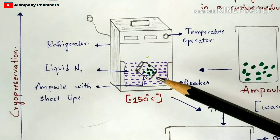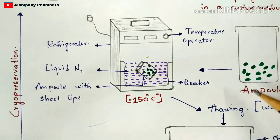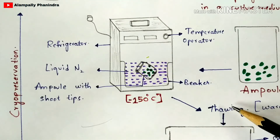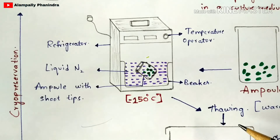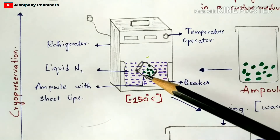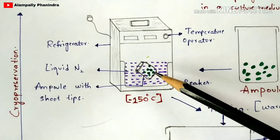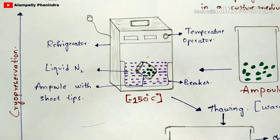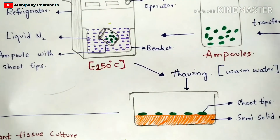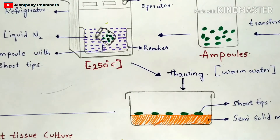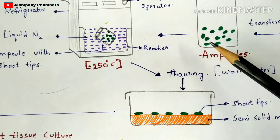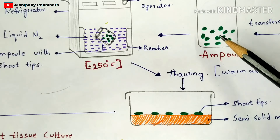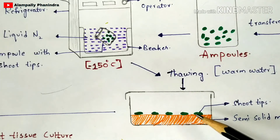Now you remove this ampoule from the liquid nitrogen and perform the process of thawing. Thawing means you take a beaker, add warm water, and thaw the ampoule containing the shoot tips in that warm water. After thawing, you take a beaker with semi-solid medium, and place all of these shoot tips onto this semi-solid medium.